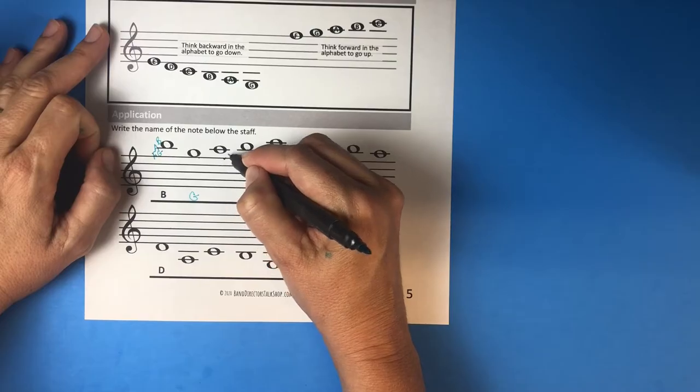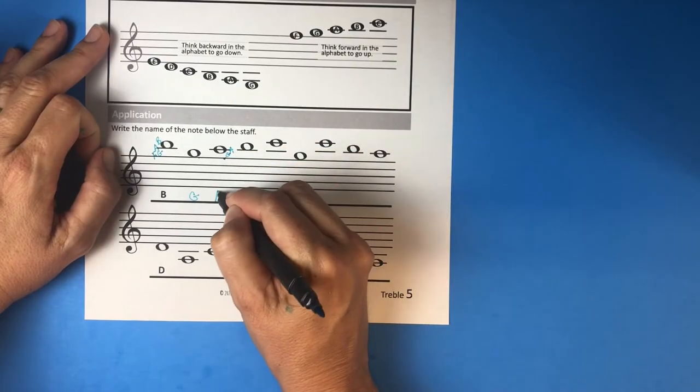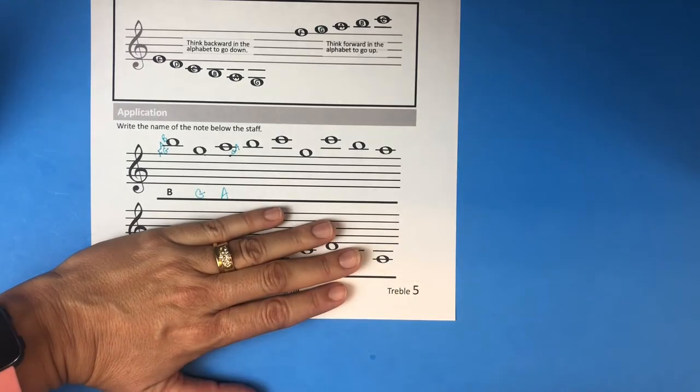So starting here, you've got F, the space would be G, the line then would be A. Why don't you pause, go ahead and finish this while you've got your brain thinking alphabet forward, and then come back to me in a second.